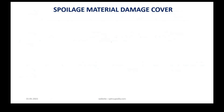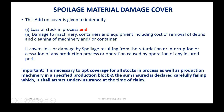Spoilage material damage cover is an important cover that people are often confused about. It is taken in chemical plants especially where chemical reactions are going on and material is being processed — in reactors and chemical vessels. If there is a sudden damage to plant and machinery or a failure of electricity supply running the machinery, that will definitely spoil the material.